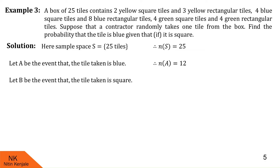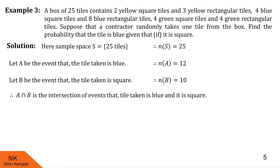We define event B as: the tile taken is a square. In the box there are 2 yellow square tiles, 4 blue square tiles, and 4 green square tiles, giving 10 square tiles altogether, so N of B is 10. A intersection B is the event that the tile taken is blue and is a square. There are 4 blue square tiles, so N of A intersection B is 4.